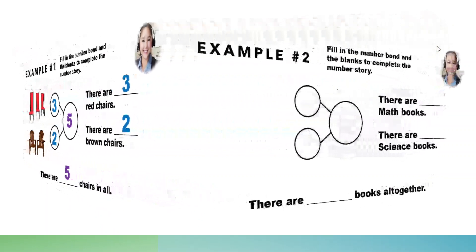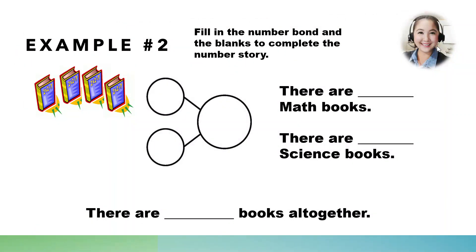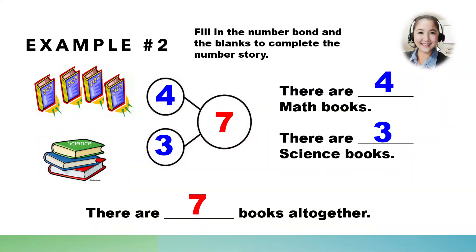Okay, one more example. Look at this. How many math books are there? Count with me. 1, 2, 3, 4. Very good! There are 4 math books. What about this? How many science books are there? Okay, 3. There are 3 science books. And so, what is the total? Or how many books are there all together? Great! There are 7 books all together.